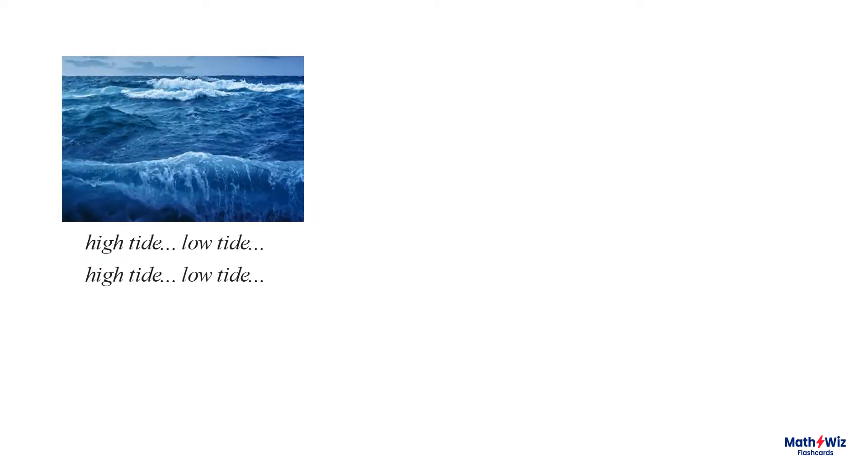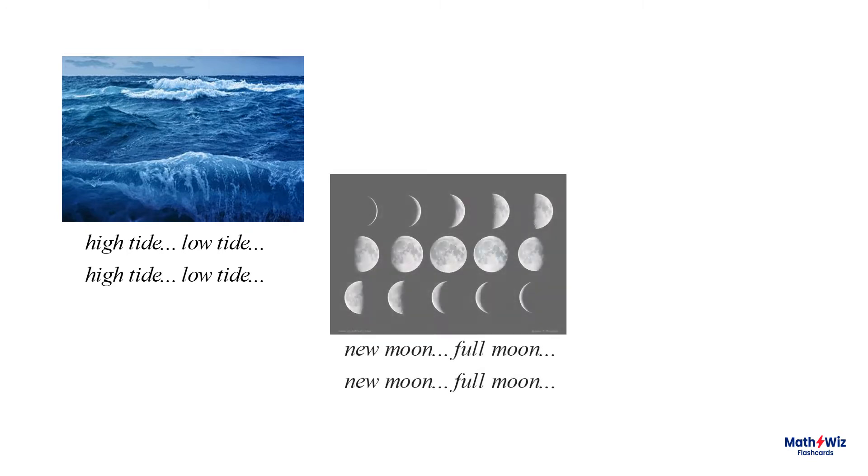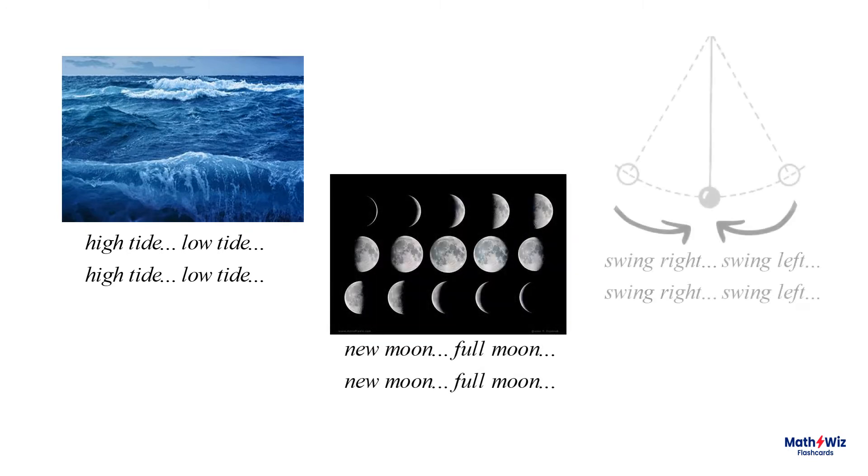One property of a special group of curves is that they are periodic, like the ocean high and low tides, or the phases of the moon, or the swinging back and forth of a pendulum on a grandfather clock.